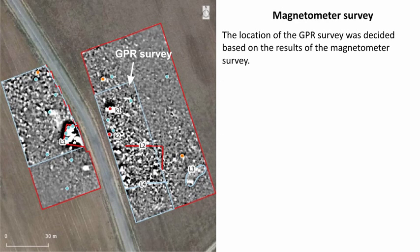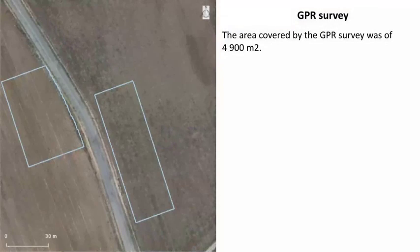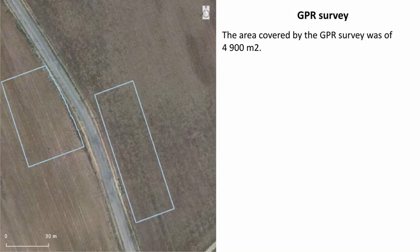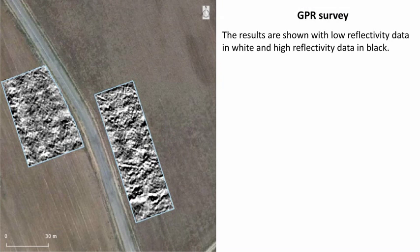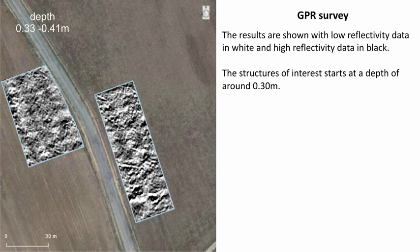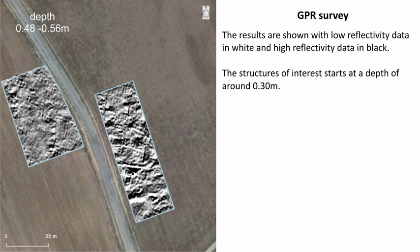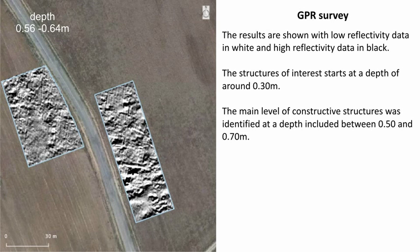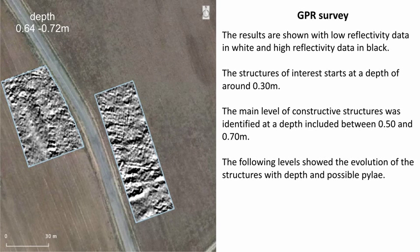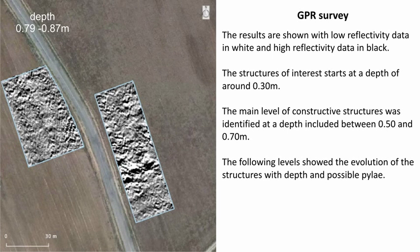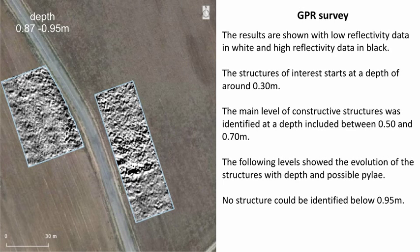The location of the GPR survey was decided based on the result of the magnetometer survey. The GPR survey covered an area of around 5,000 square meters. The results are shown with low reflectivity data in white and high reflectivity data in black. The structure of interest starts at a depth of 30 cm. The main level of constructive structures was identified at depths between 50 and 70 cm. No structure could be identified below 95 cm.